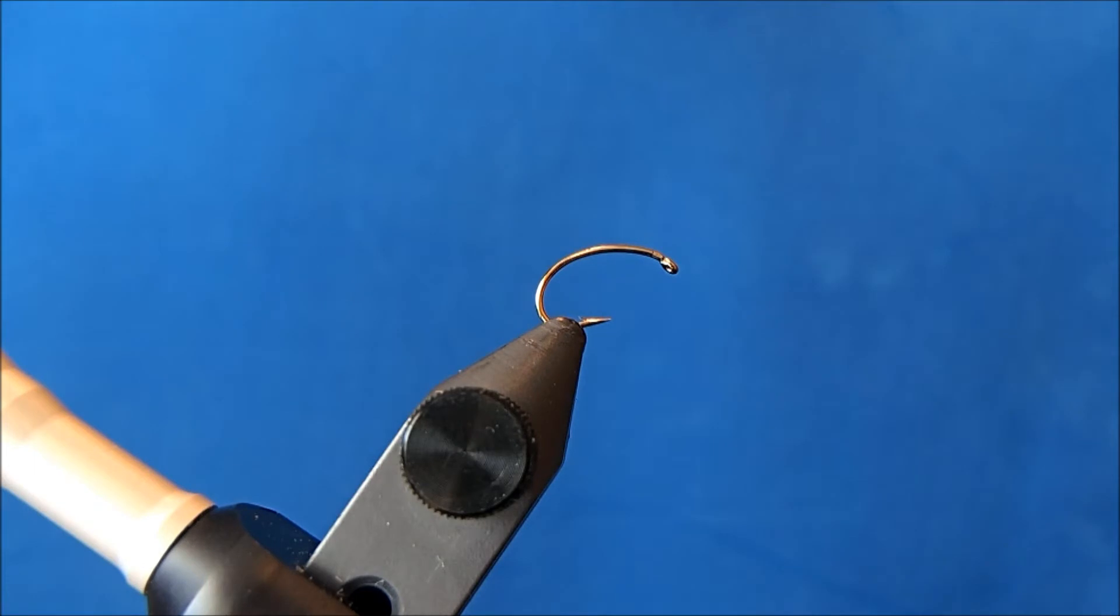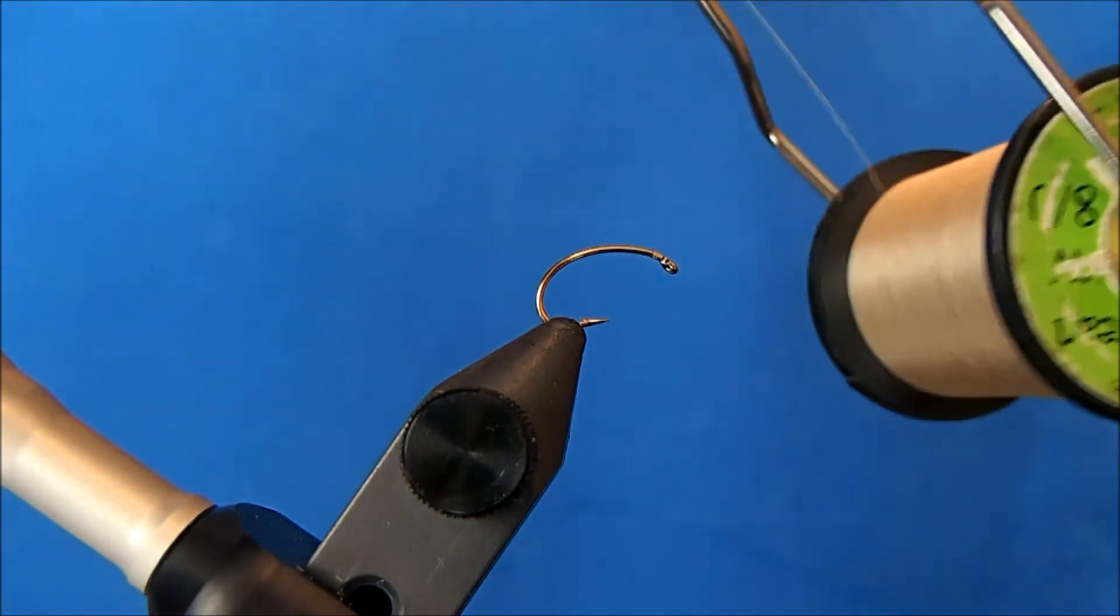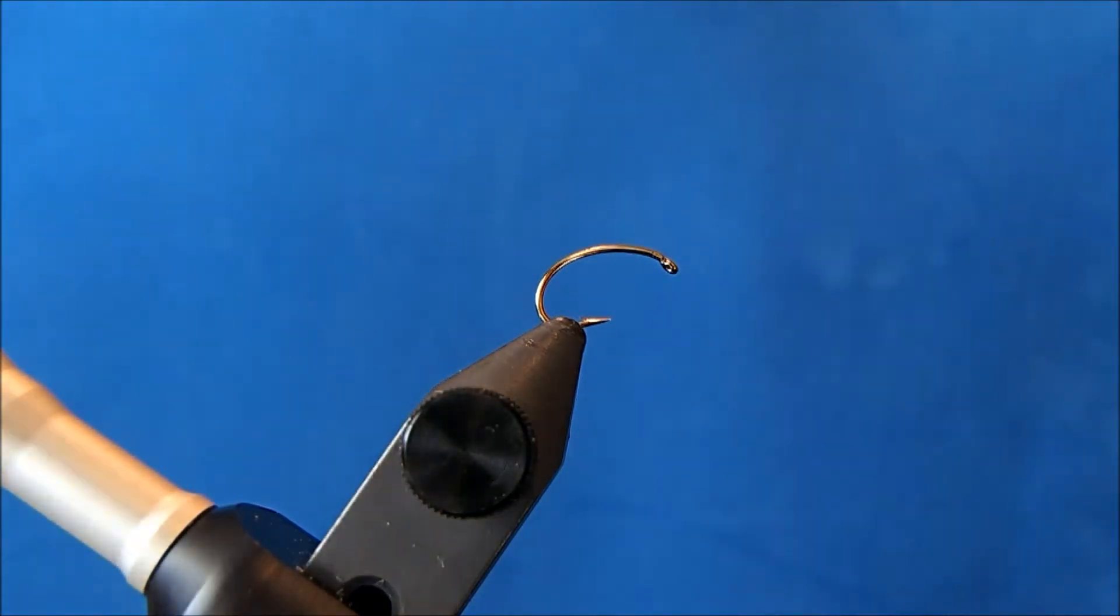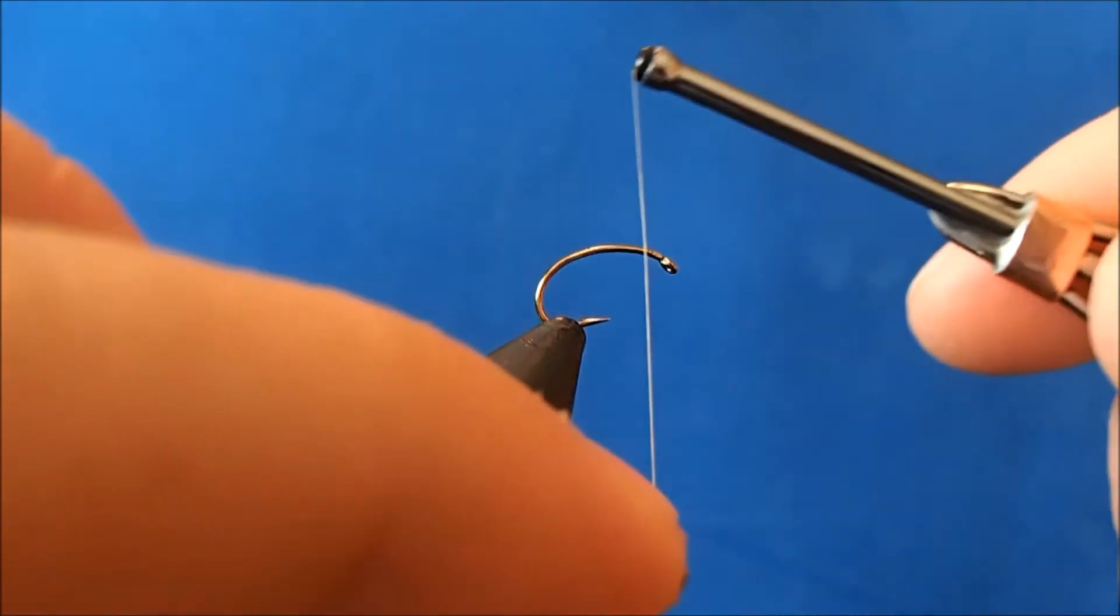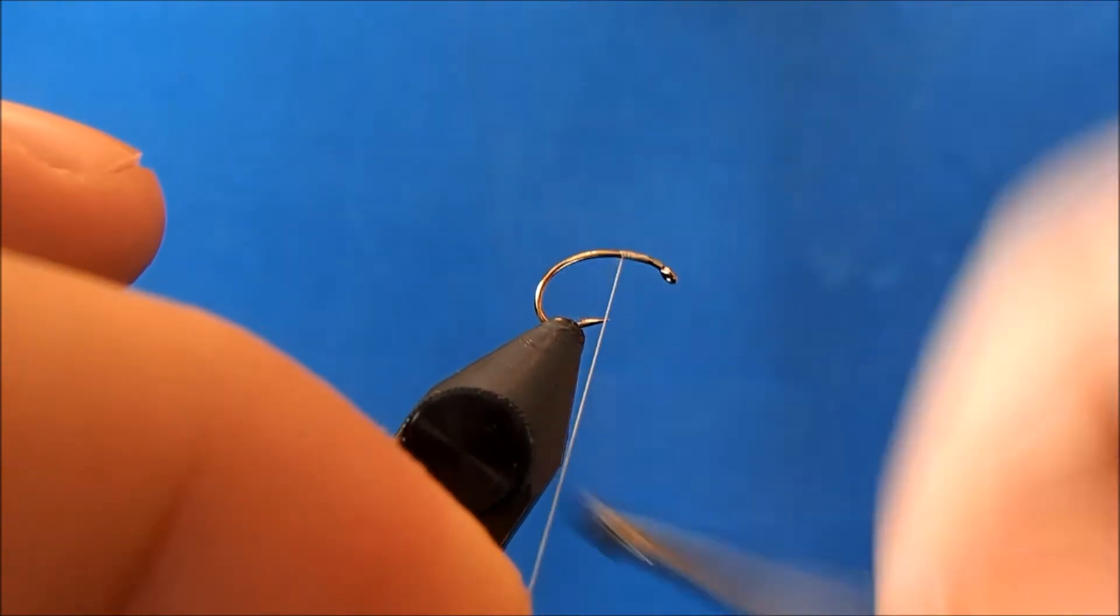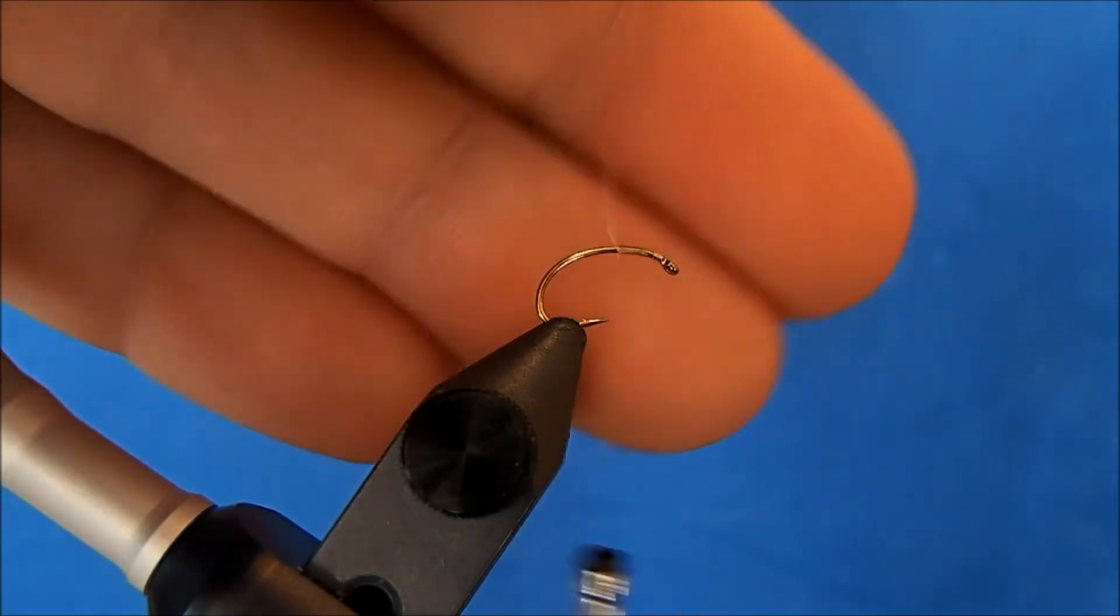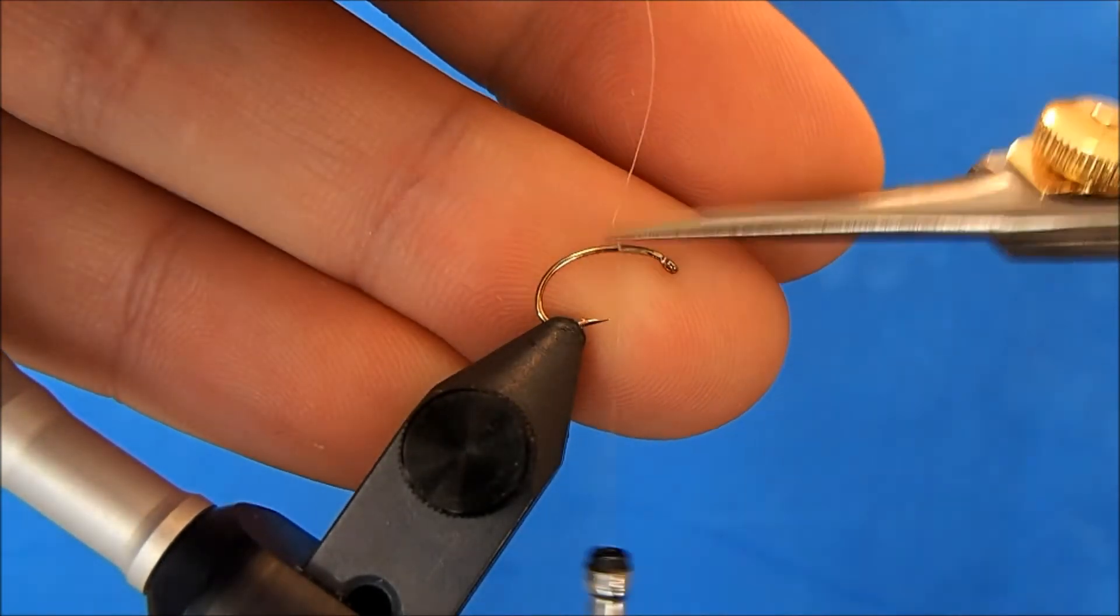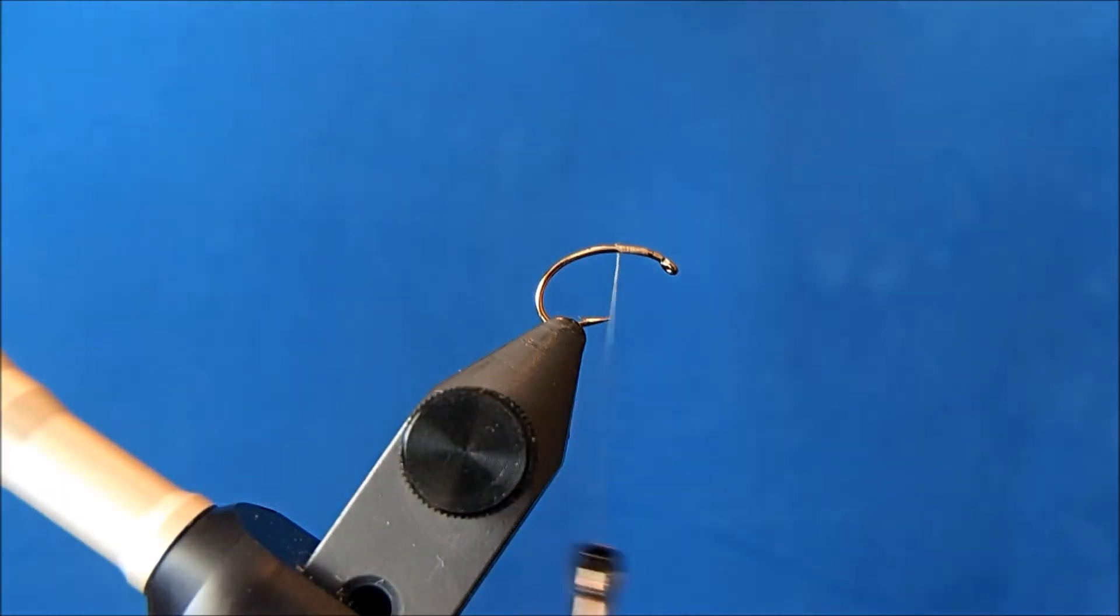Starting off with a size 14 scud hook in the vise, and the thread that I'm going to use is an 8-0 in tan. I'll start this at the three-quarter mark or so on the hook shank and take enough wraps to get it nice and tight, and then trim the tag there.